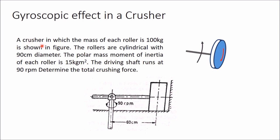The problem is a crusher in which the mass of each roller is 100 kg. This crusher has two rollers — one attached to this arm, roller one, and another roller attached to the opposite side of the arm. The rollers are cylindrical with 90 cm diameter, so the radius will be 45 cm.